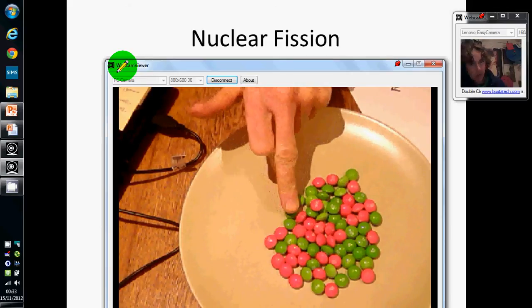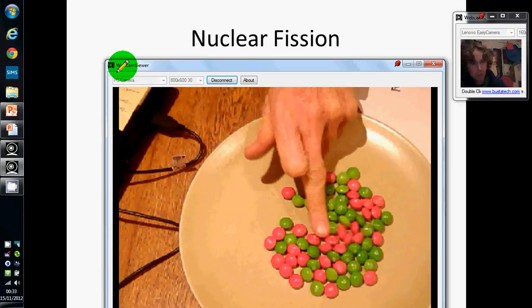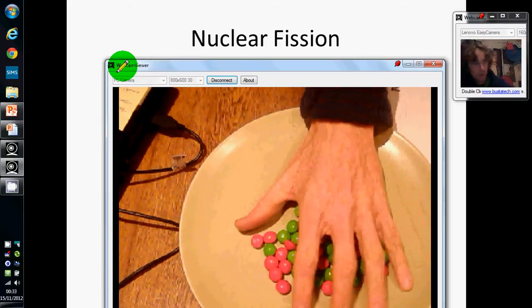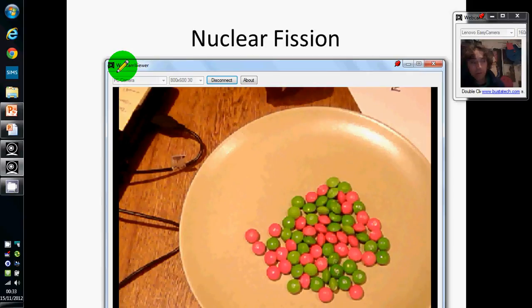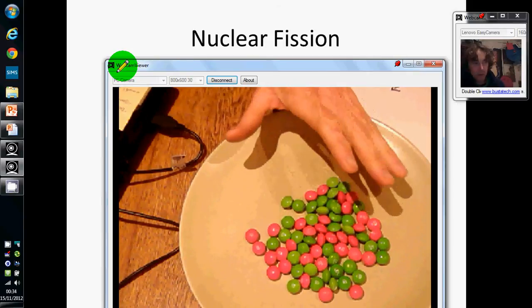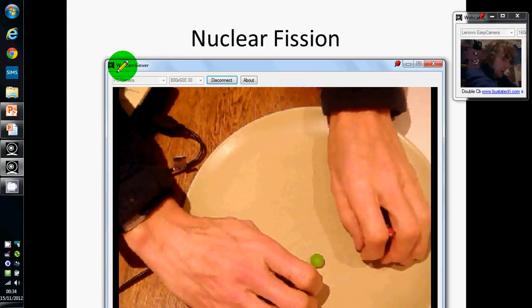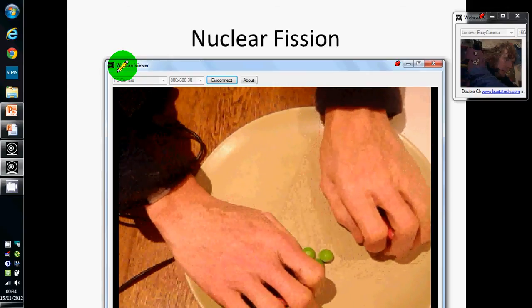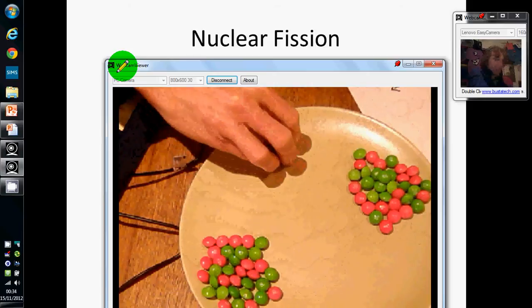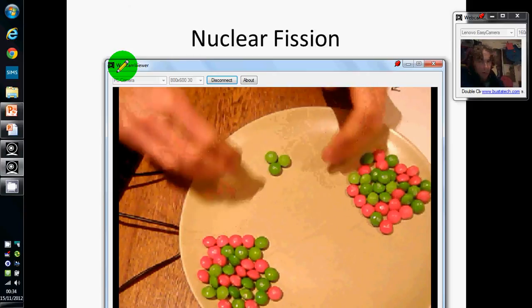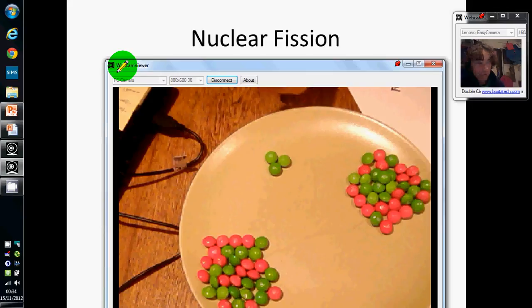In comes this extra neutron. This extra neutron starts to agitate things—it makes the nucleus unstable. That neutron has made that nucleus unstable and now the combination is not right, and it's going to split up.